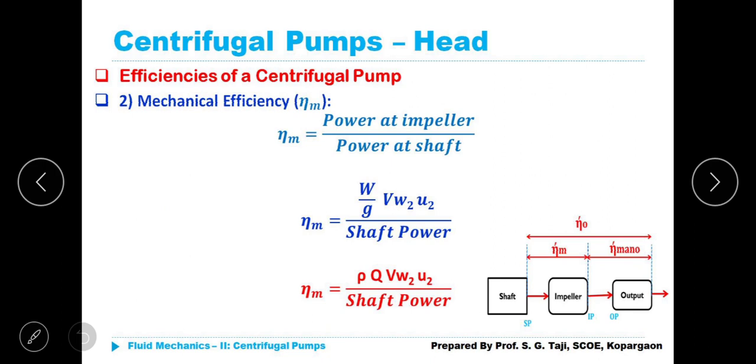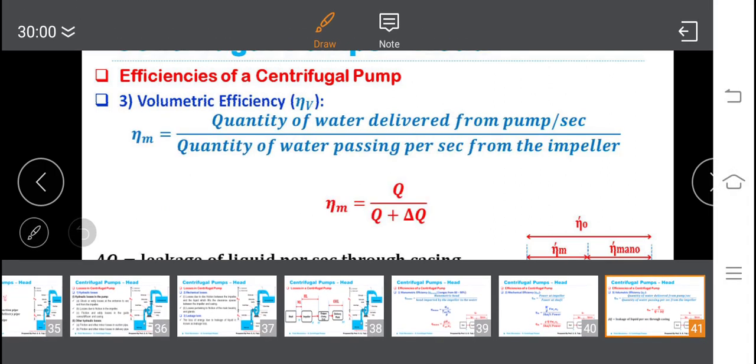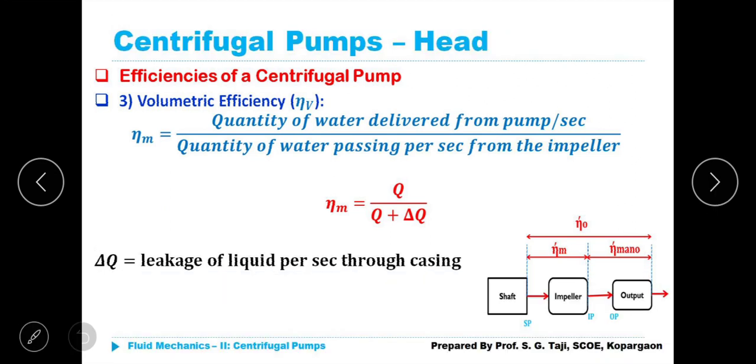Next, mechanical efficiency eta suffix m. It is a ratio of power at impeller divided by power at shaft. Power at impeller W by G VW2 U2 divided by shaft power SP. SP here is shaft power, rho Q VW2 U2 divided by SP, shaft power.